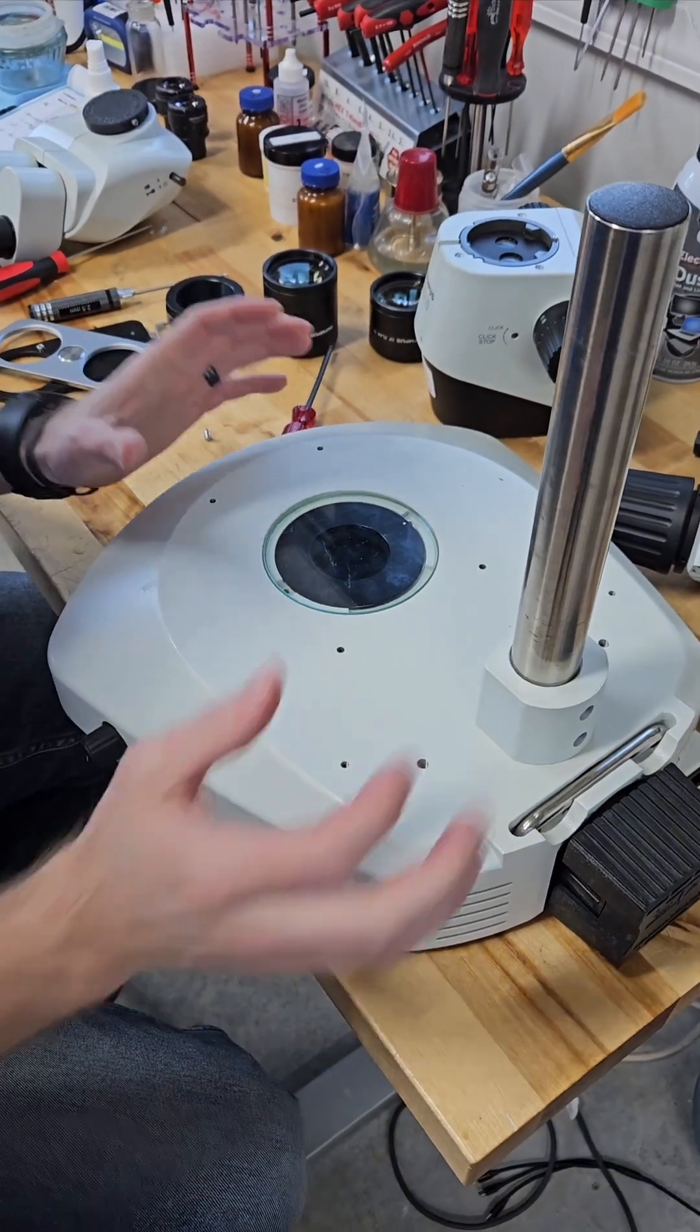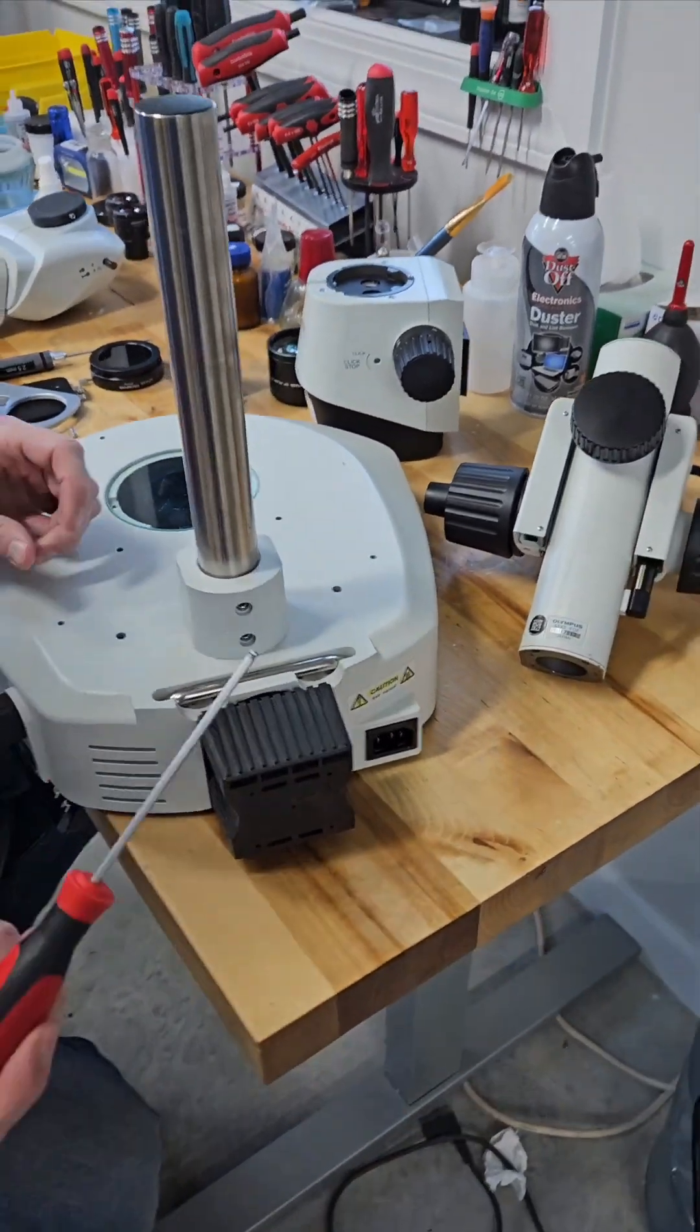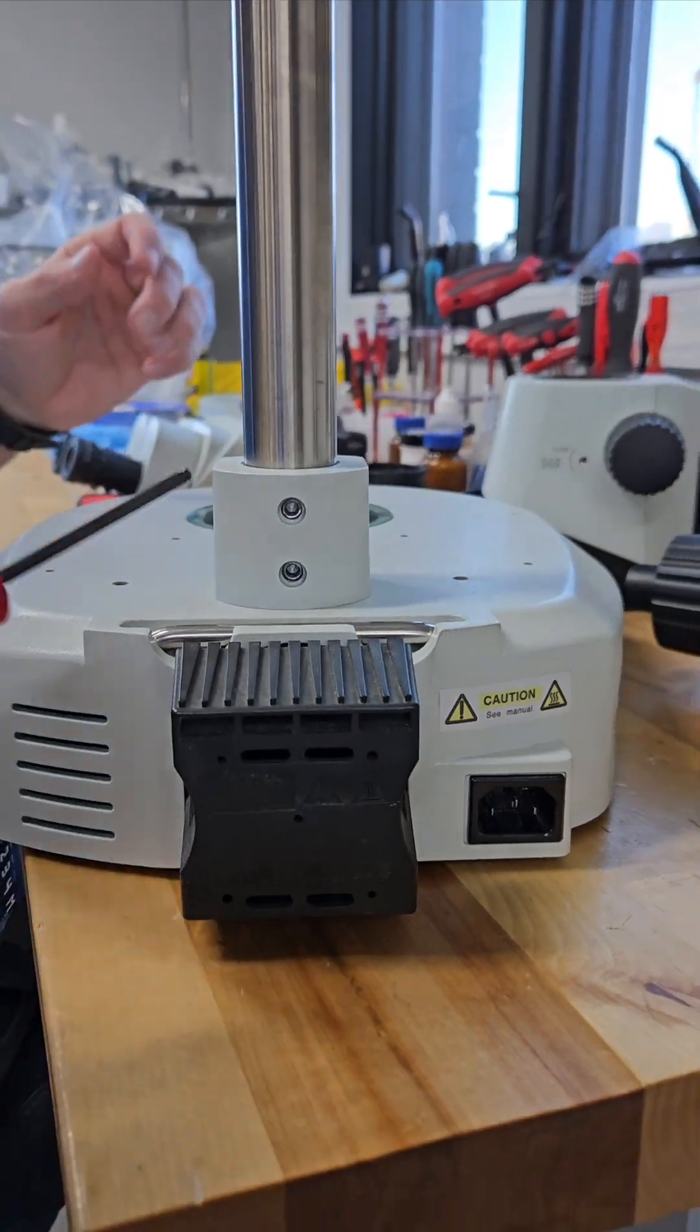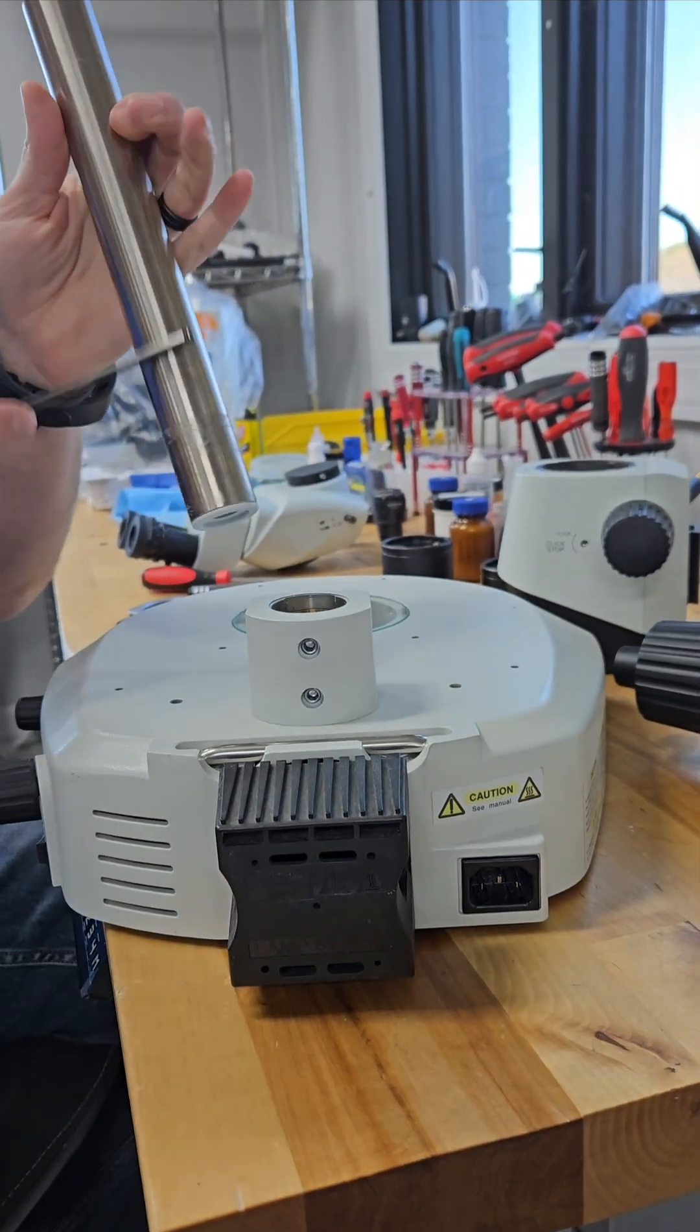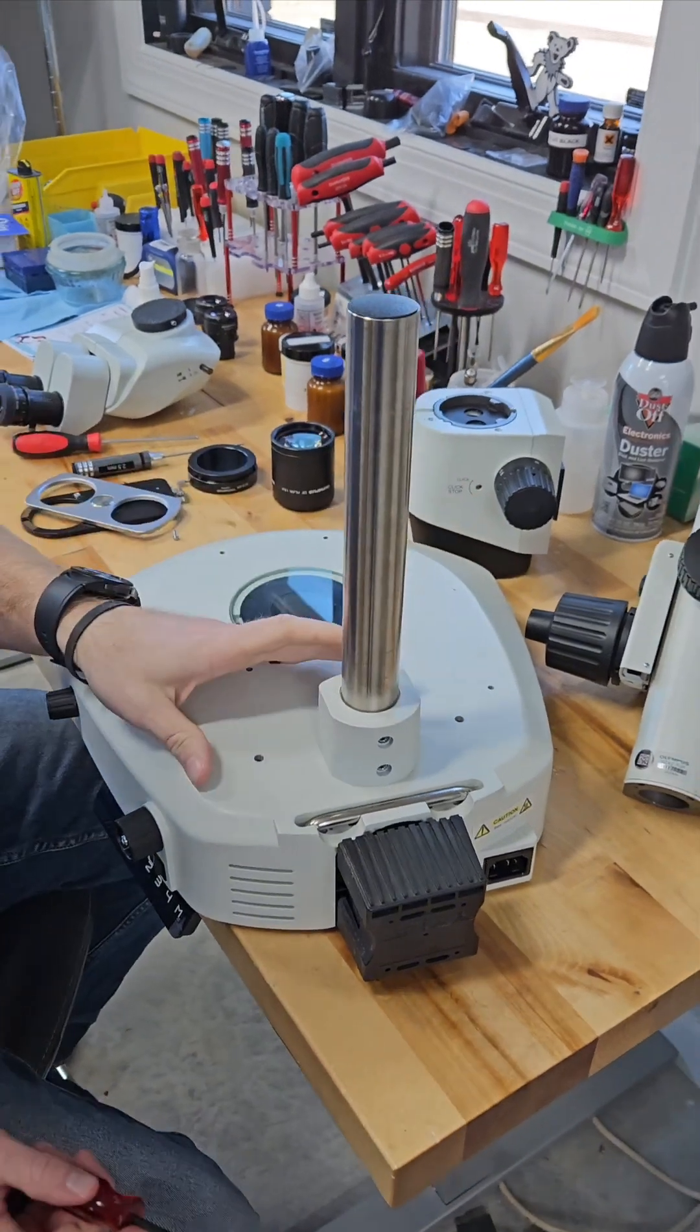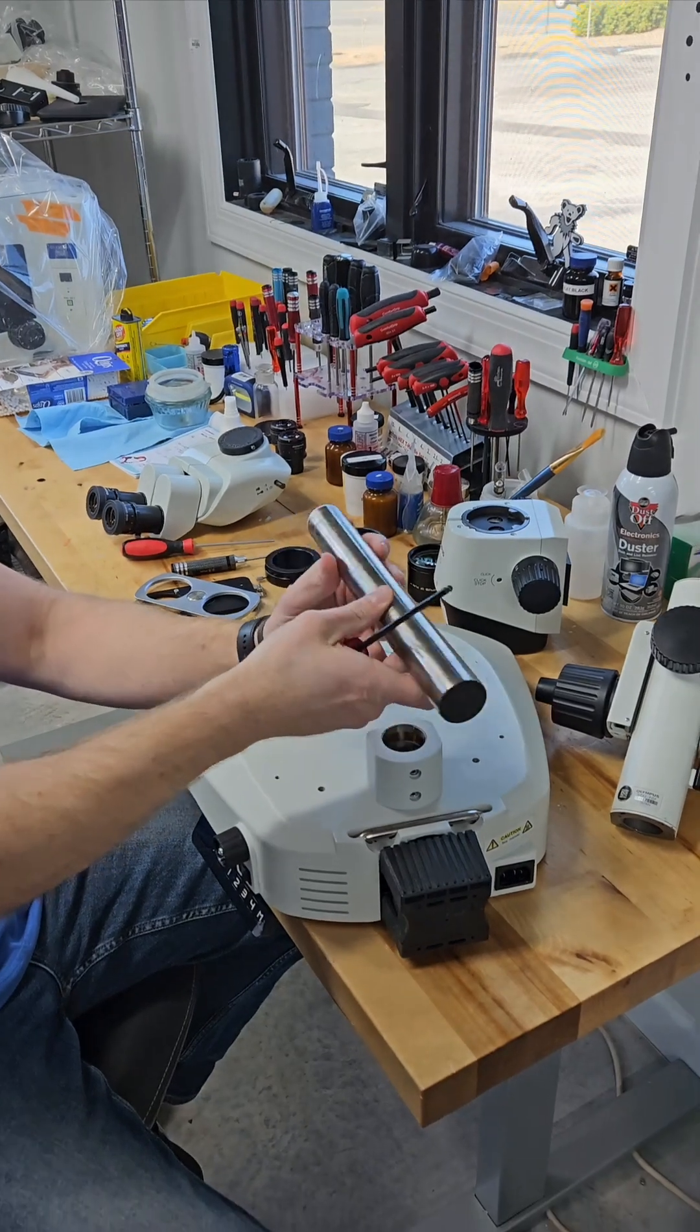If you do need to take this column out, this is going to be a three millimeter Allen wrench, or excuse me, four millimeter Allen wrench. Loosen both of these and the column comes out. This column right here, you can get a wide variety of lengths depending on how much working distance you need.